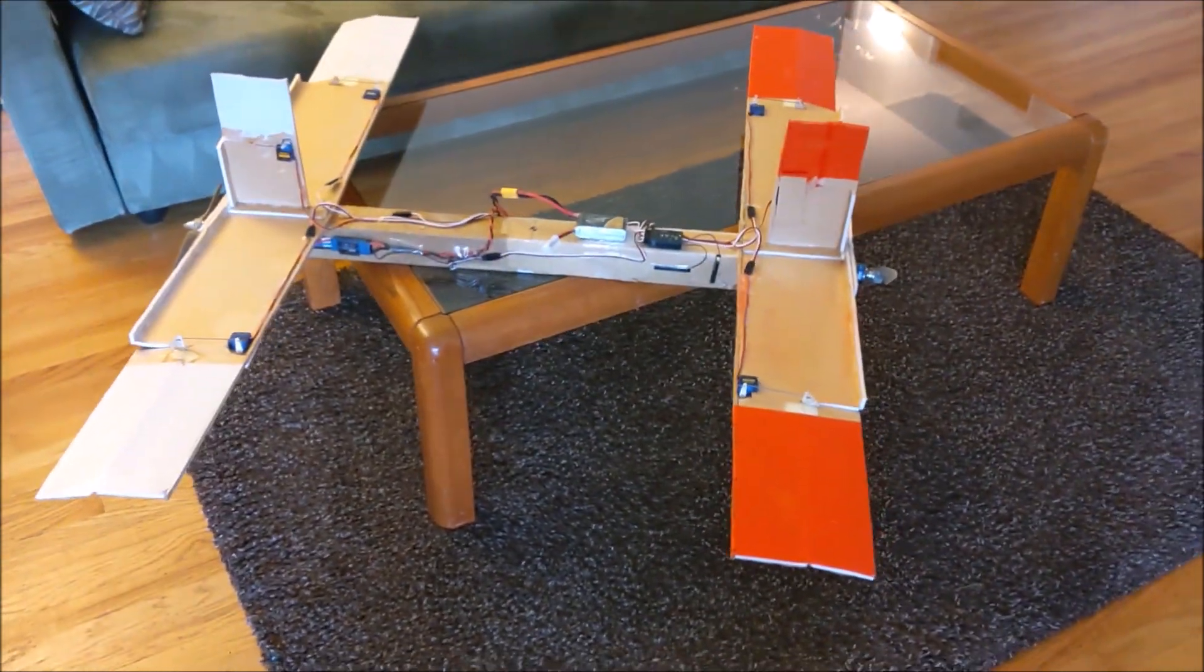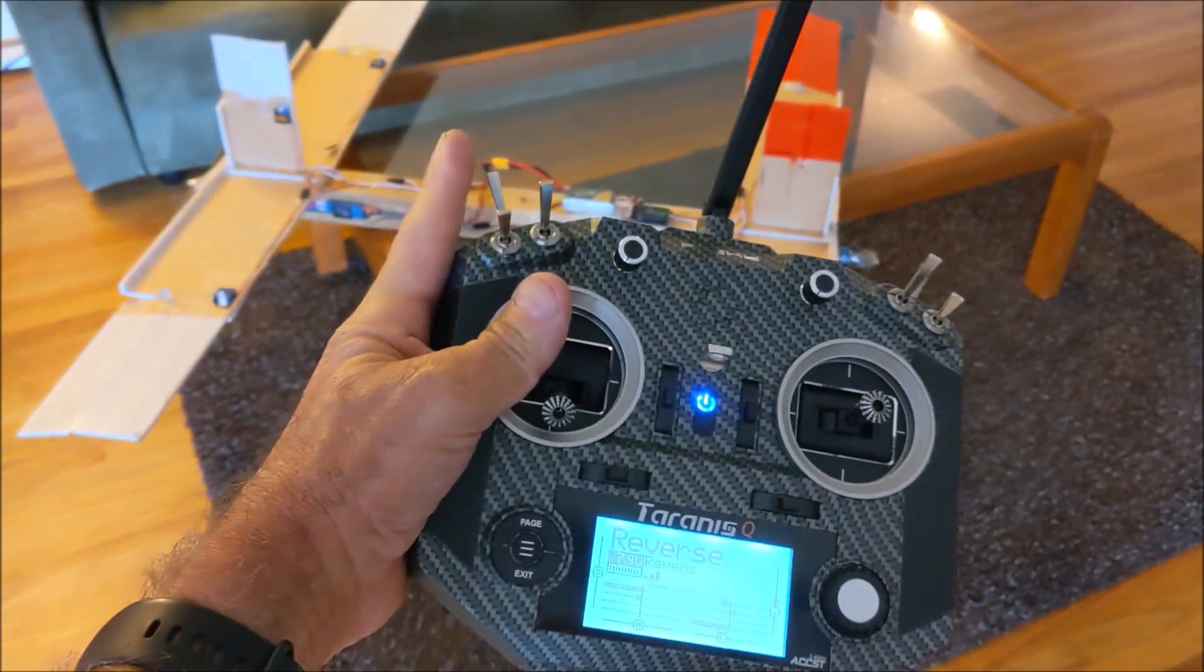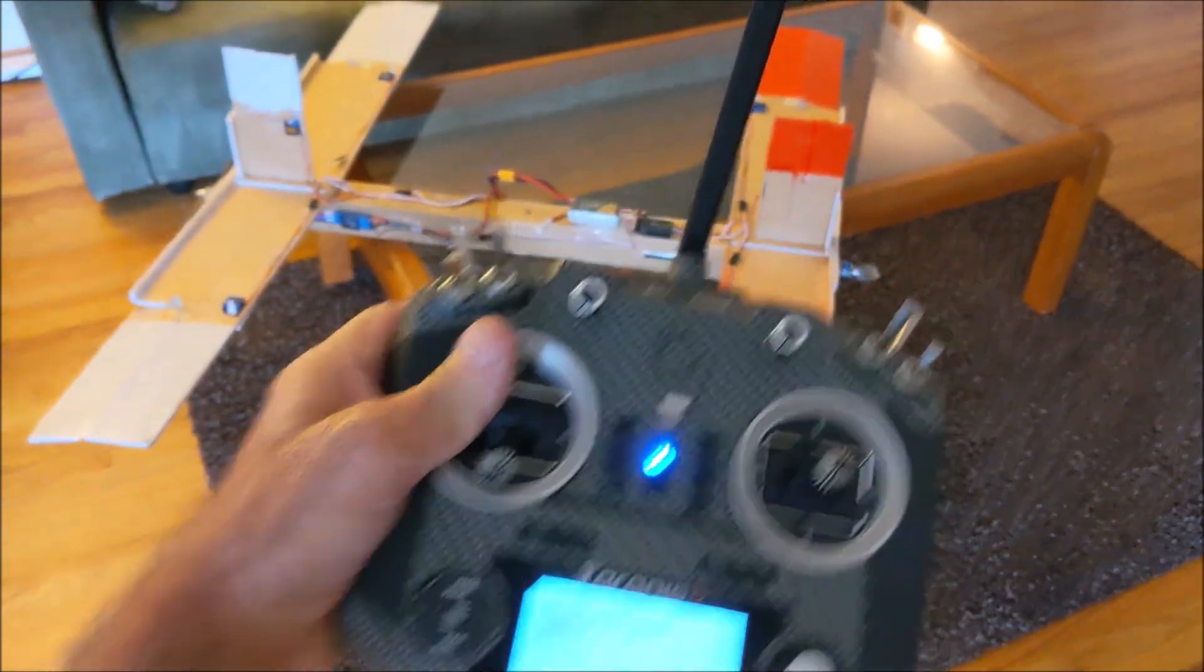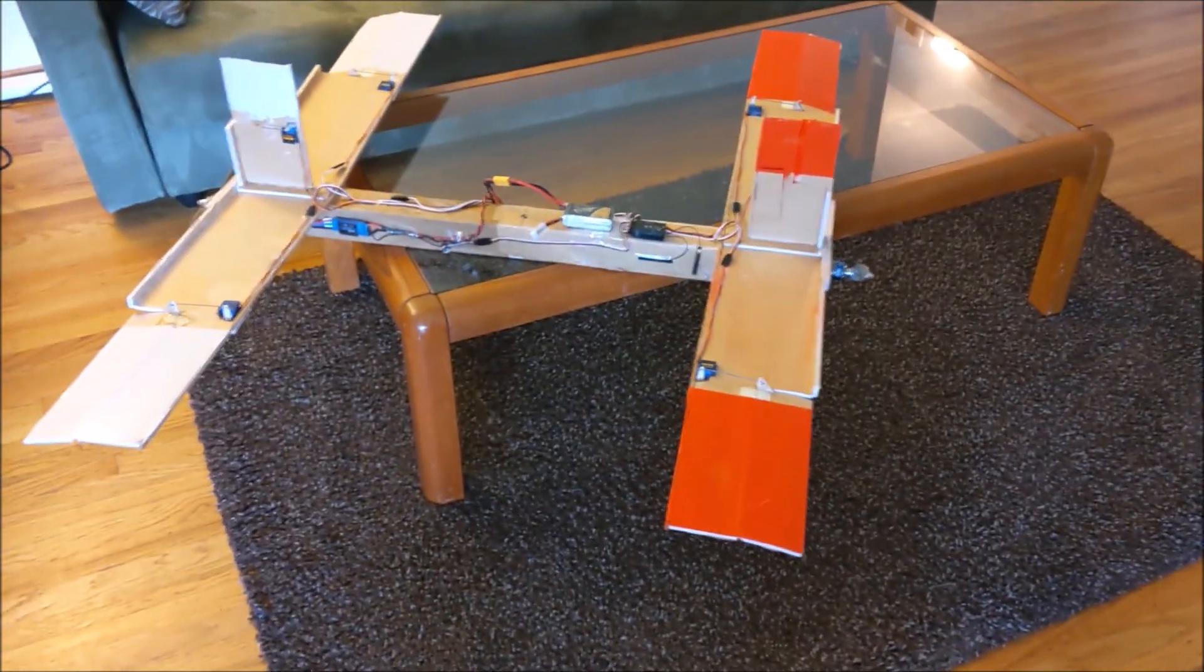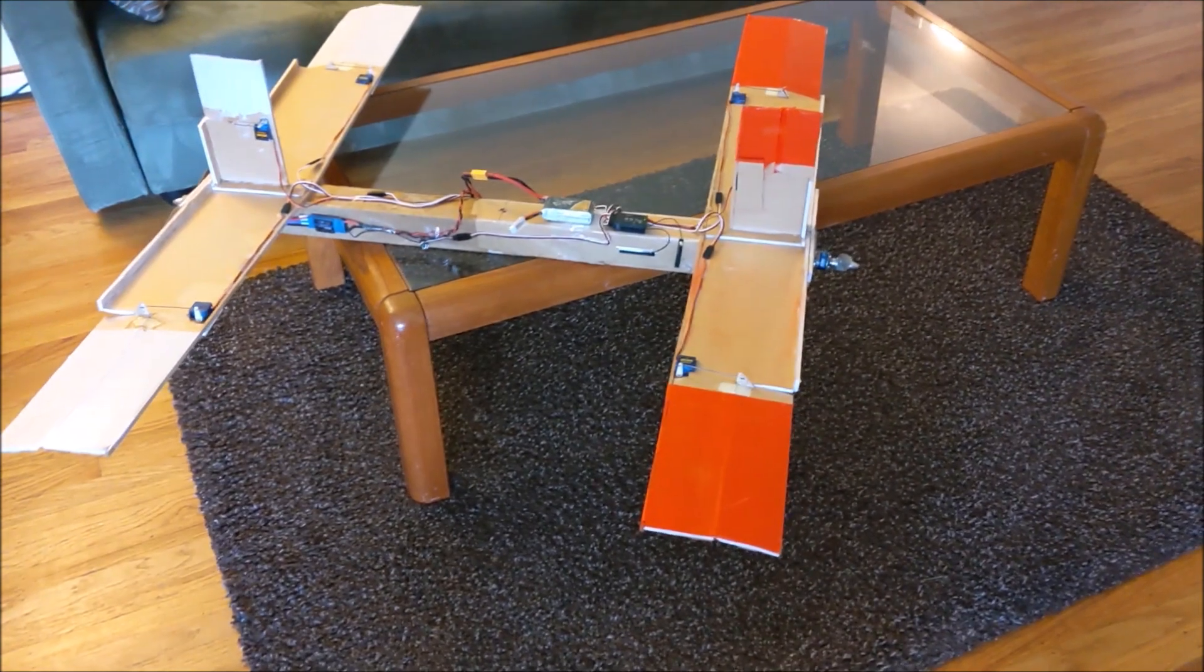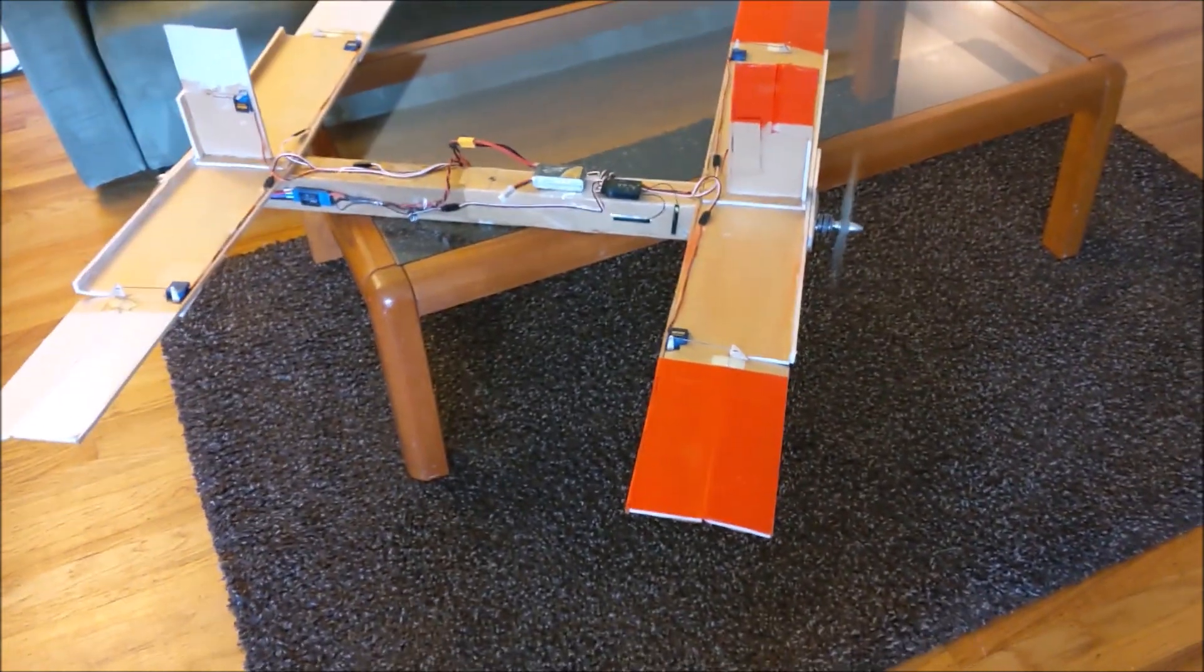So I have one switch on the transmitter, the switch right here, and that decides which direction the plane flies. And when I throw that switch, it changes which motor is running. So right now, you can see that motor runs.